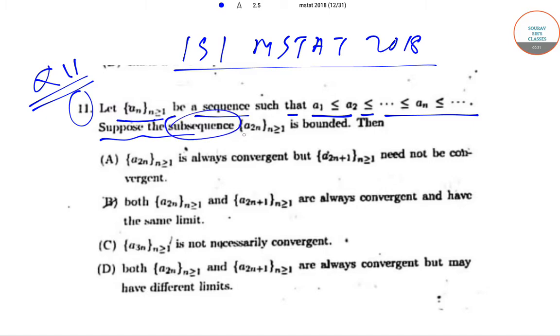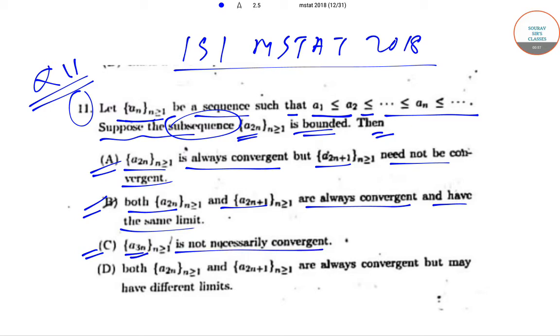Suppose the subsequence a_{2n}, where n is greater than or equal to 1, is bounded. Then, option A says a_{2n} is always convergent but a_{2n+1} need not be convergent. Option B says that both a_{2n} and a_{2n+1} are always convergent and have the same limit. Option C says a_{3n} is not necessarily convergent. And option D says both a_{2n} and a_{2n+1} are always convergent but may have different limits.